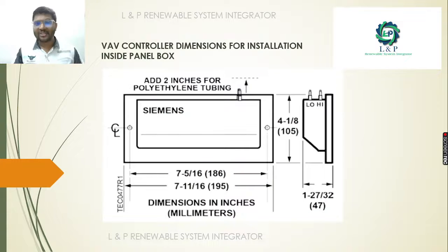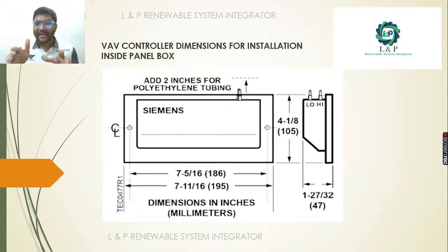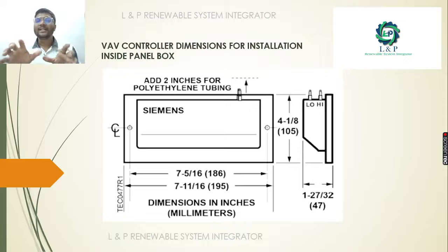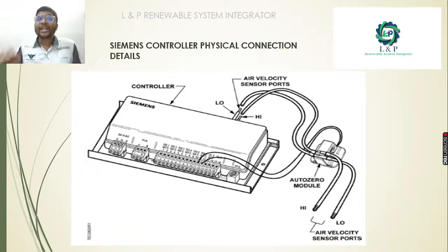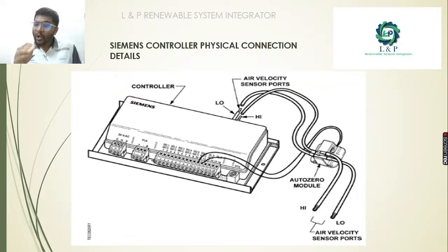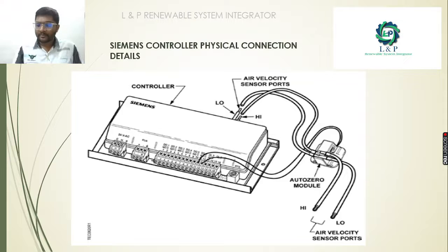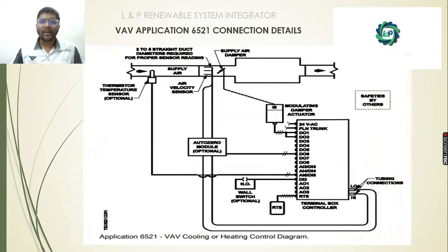These are the physical dimensions. If you are planning a PLC panel, you must know these dimensions clearly so you can fix your controllers in the electrical control panel. If you are planning to use your VAV in fully occupied mode, you can use the AutoZero module so that the VAV will run continuously.